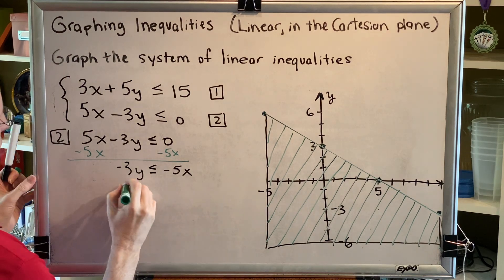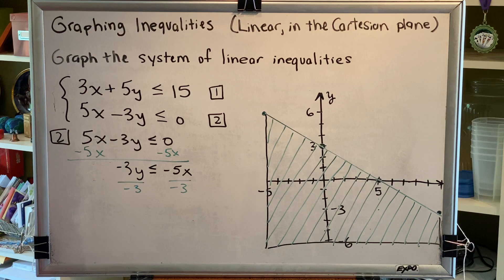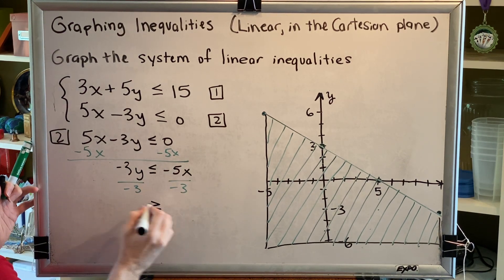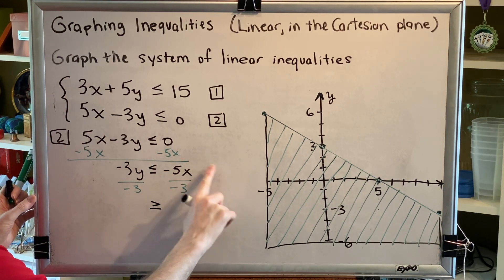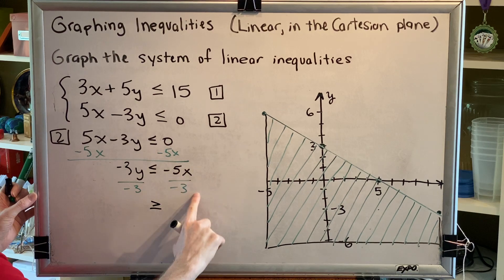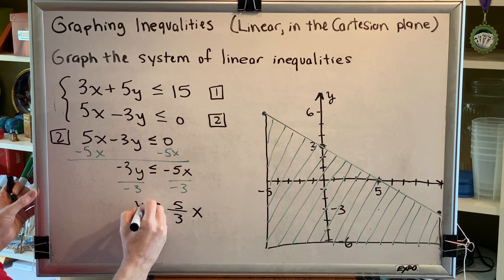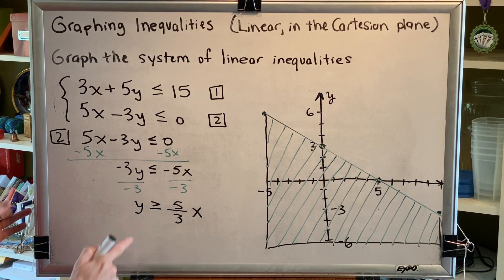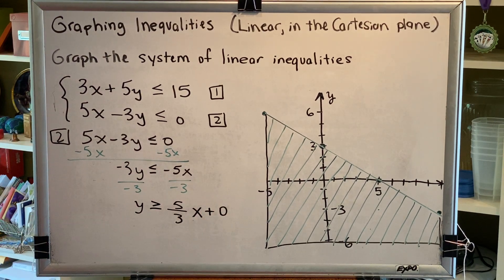We're going to divide both sides by the coefficient of y, which is negative 3. We're going to keep in mind two things. One, when you divide an inequality by a negative, you have to swap the direction of your inequality symbol. Two, when you divide by a negative, it changes the sign of all terms. So we get y is greater than or equal to positive 5/3 x. And to make this look like slope-intercept form, I can put a plus 0 at the end. That was step one.